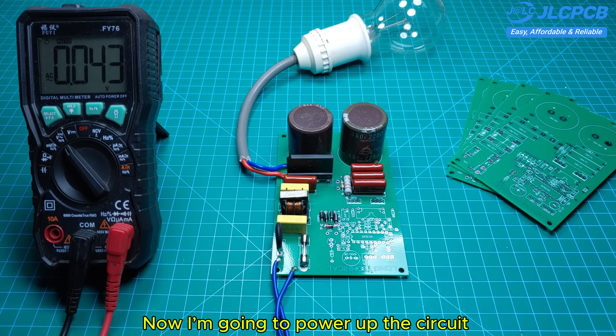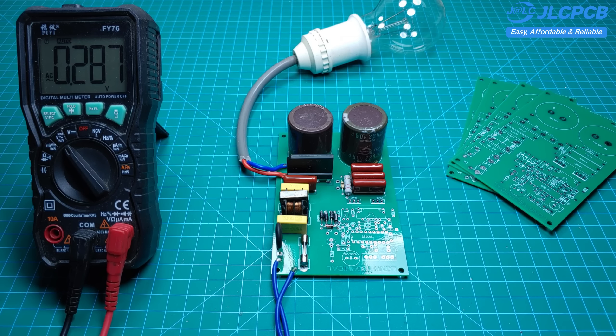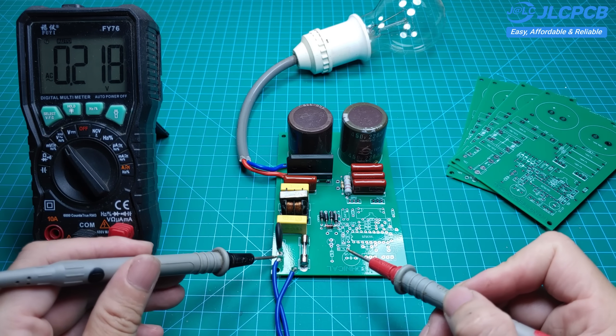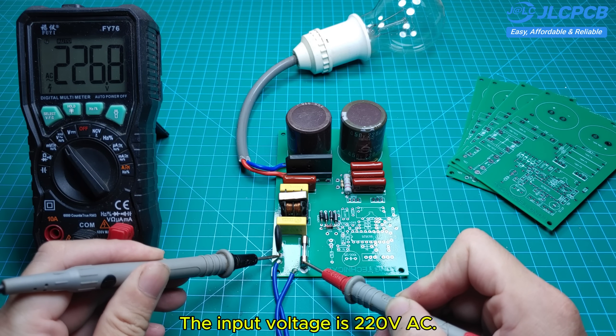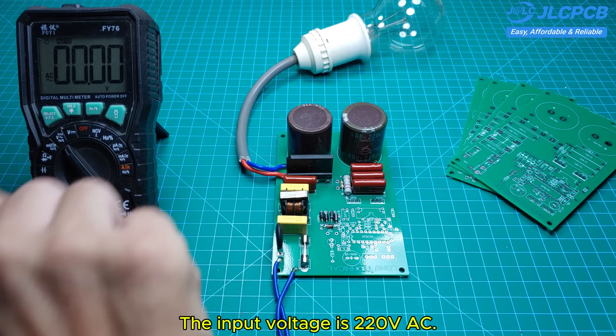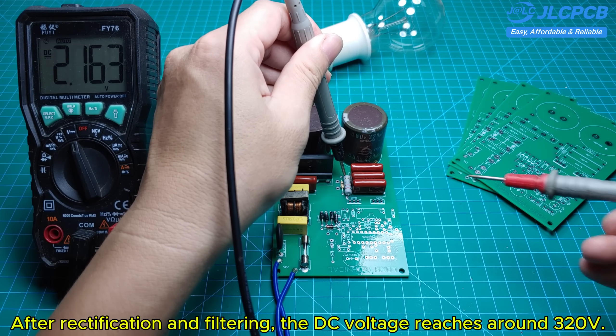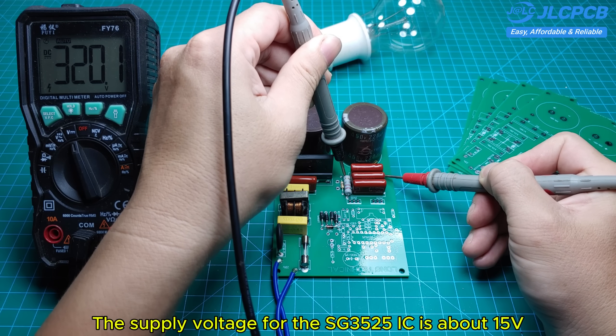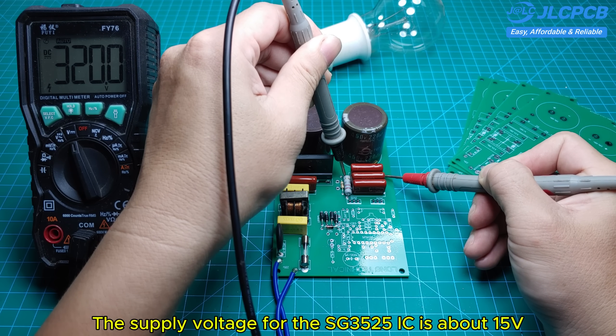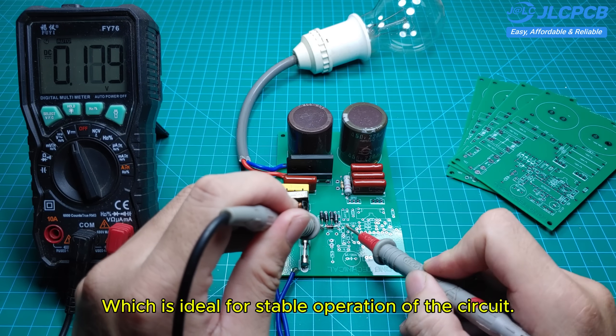Now, I'm going to power up the circuit and check the required voltage levels. The input voltage is 220 volts AC. After rectification and filtering, the DC voltage reaches around 320 volts. The supply voltage for the SG355-5 IC is about 15 volts, which is ideal for stable operation of the circuit.